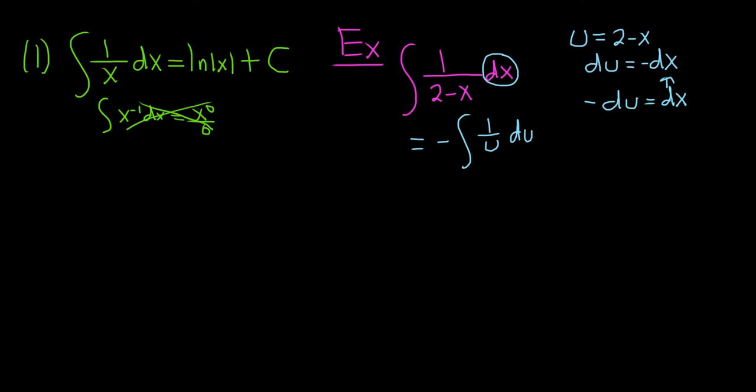Now we can apply the formula. The formula says that the integral of 1 over U DU is ln absolute value of U. So this is minus ln absolute value of U plus our constant C. And then you just replace U with what it is: negative ln absolute value 2 minus X plus C. So that's an important formula and this was just a quick simple example.